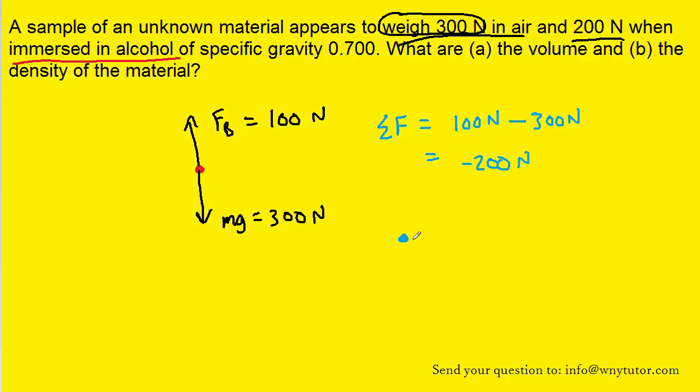So overall, the object still has a force acting down whose magnitude is 200 newtons. That would be the apparent weight of the object when immersed in the alcohol. To summarize, in air the object weighs 300 newtons, but when you immerse it in alcohol, it appears to weigh only 200 newtons.